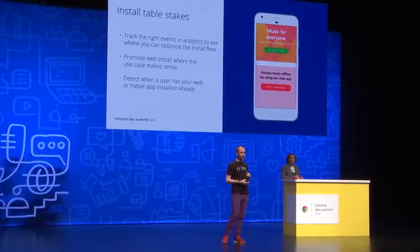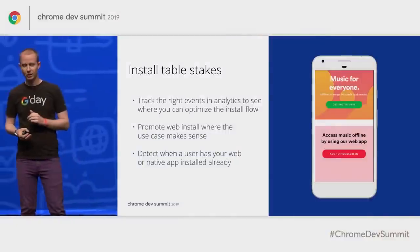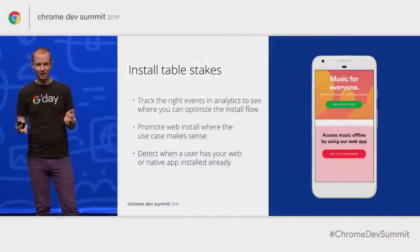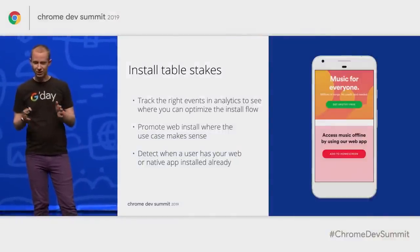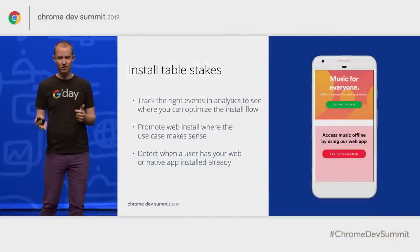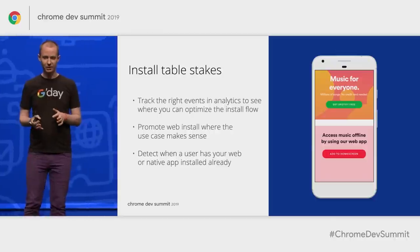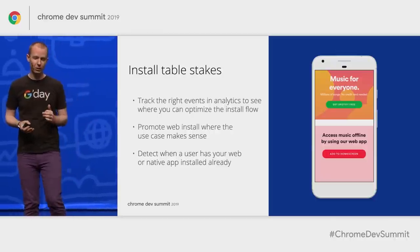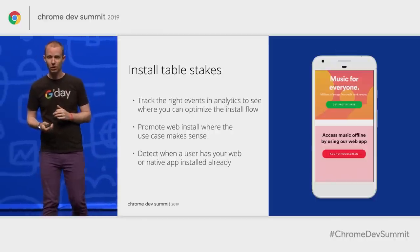You'll also want to track the right events and analytics to make sure you know what to optimize — we'll cover this a bit later. Promote web install on screens where the use case makes sense, including desktop, tablet, and mobile. Take this example of Spotify's CTA from a landing page — we'll be covering more of these as we go along.